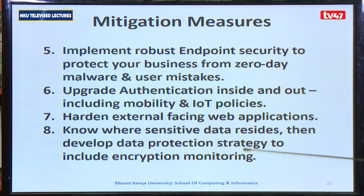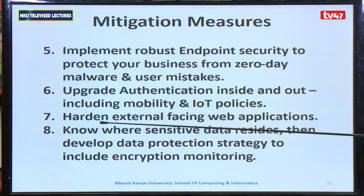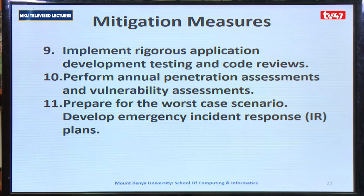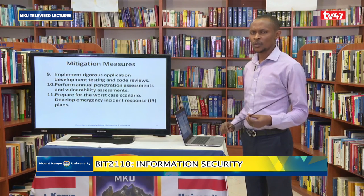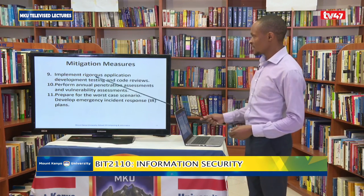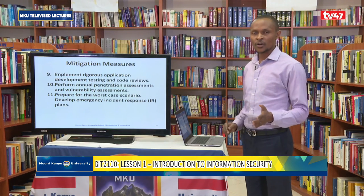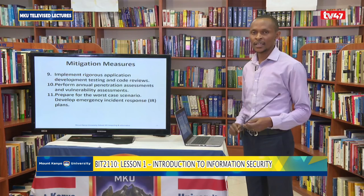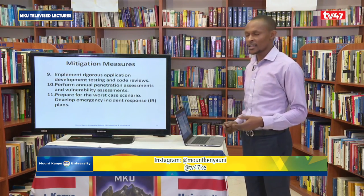Point eight is to know where sensitive data resides, then develop a data protection strategy to include encryption monitoring. We'll understand this much more when we come to the classification of data, so that you are able to implement a very secure protection for confidential and highly confidential information. The last point is to implement legalized application development testing and code reviews, because a backdoor is simply a loophole left within a system by the programmer — implementing these ensures the code is safe and a hacker cannot find a backdoor entry.